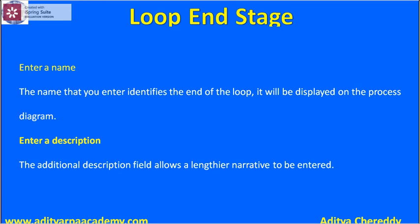Here we enter a name. We will enter the name of the process and that will identify it in the process diagram. Then we click on additional information, and it won't appear in the process diagram.